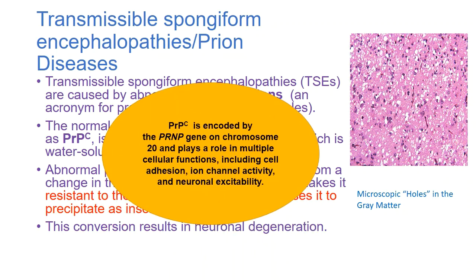PRPC is encoded by the PRNP gene, located on chromosome number 20. This gene plays a critical role in multiple cellular functions including cell adhesion, ion channel activity, and neuronal excitability — all of which are lost when there is a mutation in the PRNP gene.